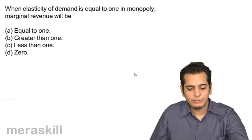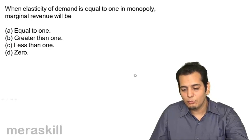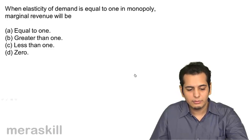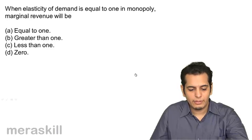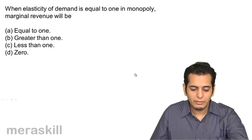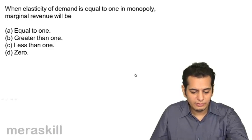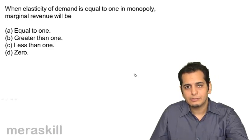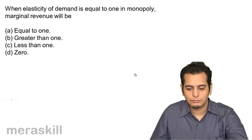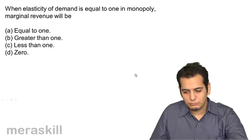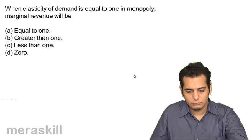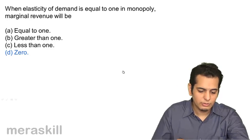Next, when elasticity of demand is equal to 1 in monopoly, marginal revenue would be: a) equal to 1, b) greater than 1, c) less than 1, d) 0. The answer is d) 0.